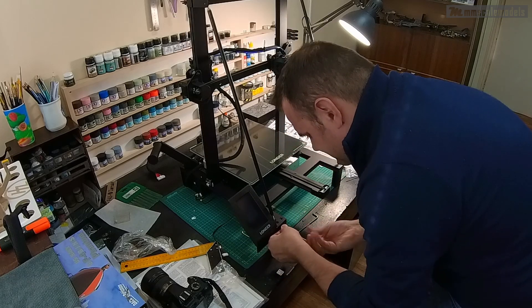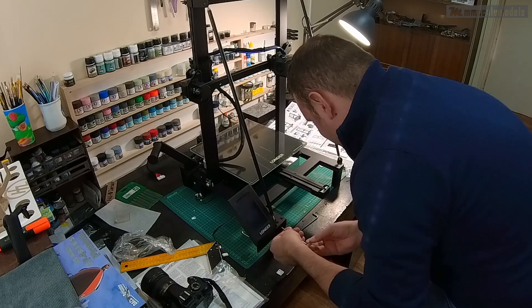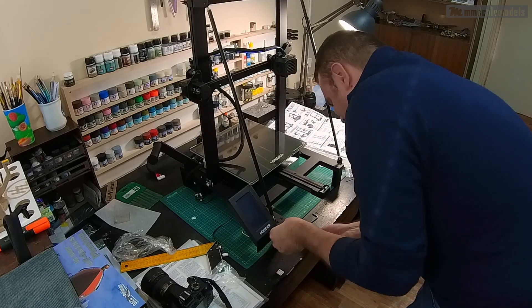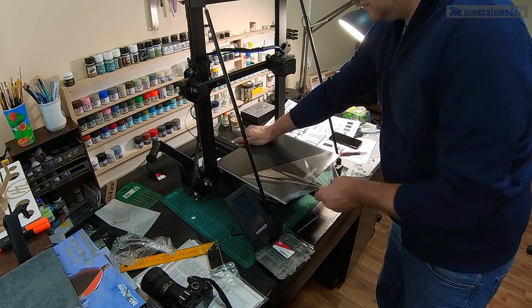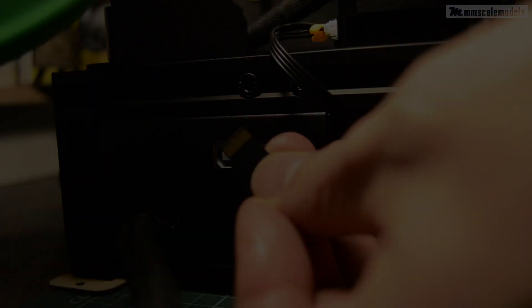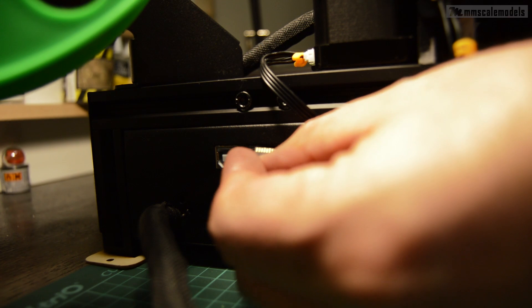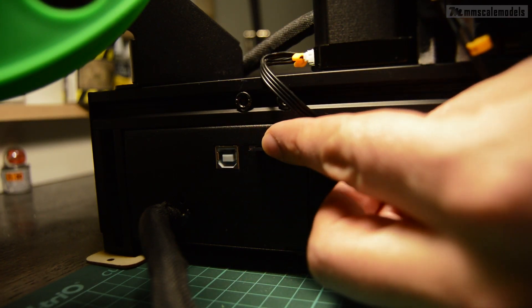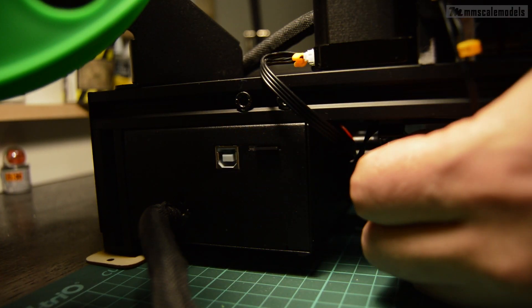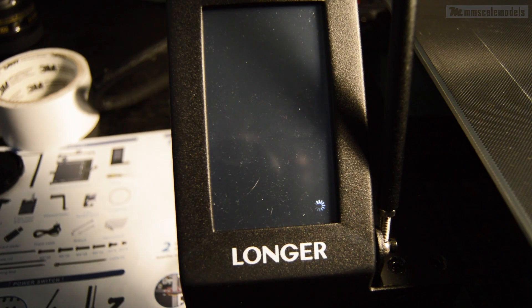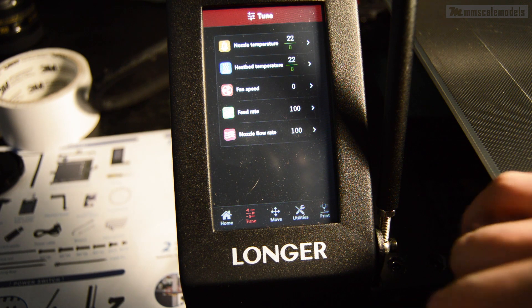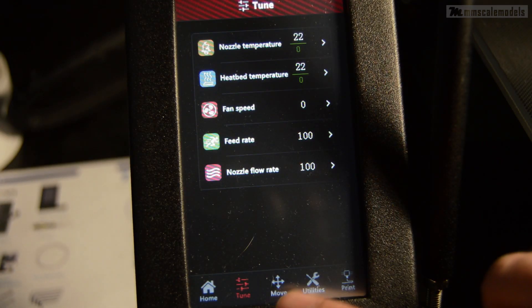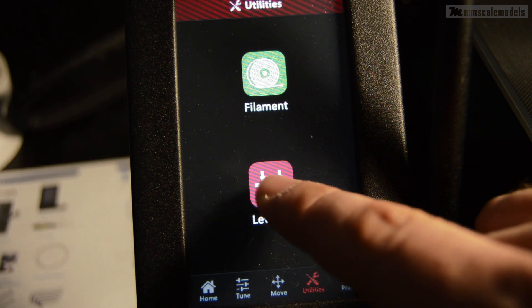The print bed is heated and it has a ceramic coated glass on top of the aluminum plate. This makes the removal of the parts easier once the bed cools down. The printer reads your 3D files from micro SD card which is included in the kit. The 4.3 inch color touchscreen is the control unit of the printer. The user interface is easy to navigate and offers a lot of on-the-fly adjustments.